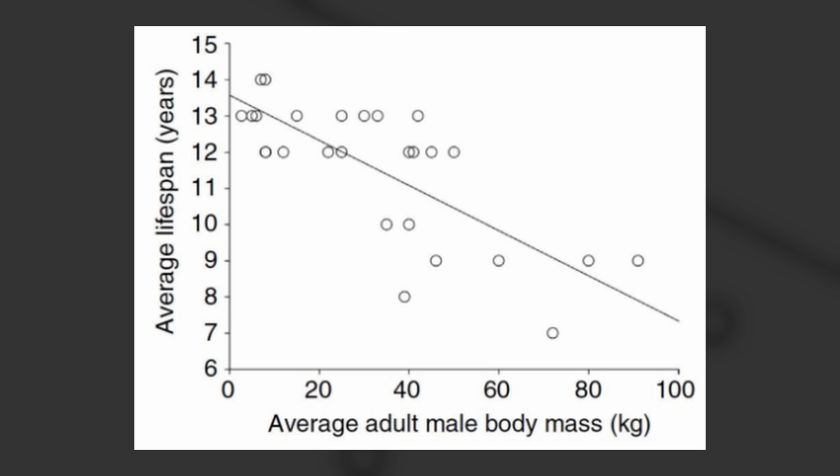If we look across all breeds, we see a nice linear relationship. Notably, it's not a log-log plot — it's a linear plot. If we plot average breed lifespan on the y-axis and adult body mass on the x-axis, we get a pretty reasonable linear correlation. When we look across species it's a log-log plot, but when we look within species it's a linear-linear plot.